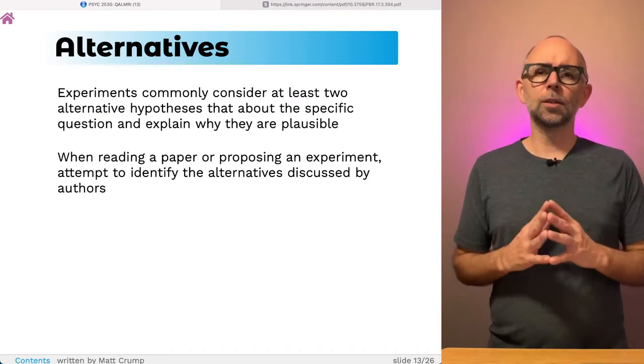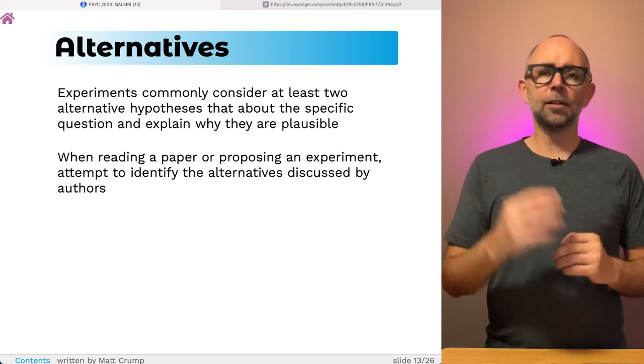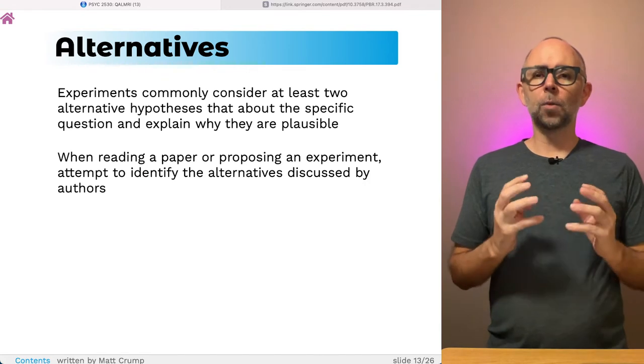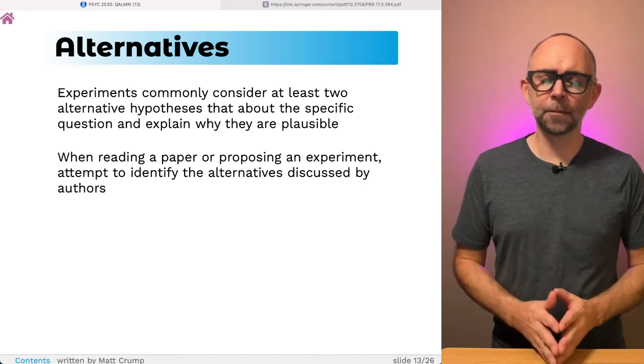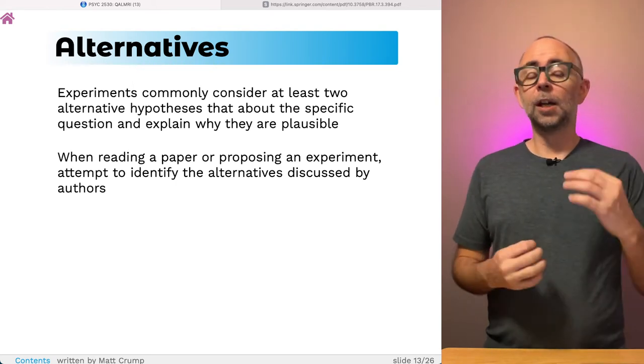And that means when people are typing and they're touching the keys, how does touching the keys influence typing performance? Does it matter? Does it not matter? Why would I want to ask a specific question like that? These questions are related to alternatives. This is the second letter in QALMRI. Now, alternatives refer to different ways of explaining something. Alternative hypotheses or alternative explanations.